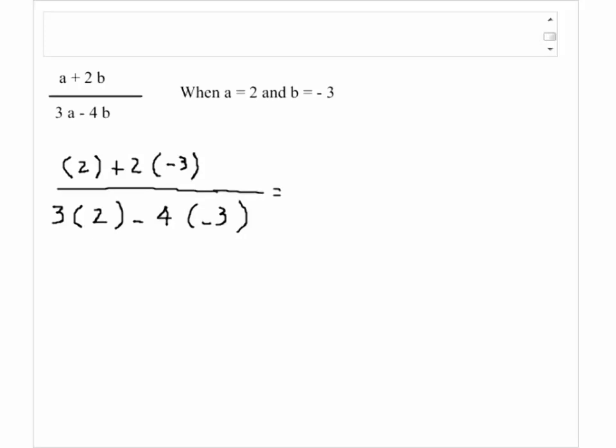I just have to follow the order of operations. Here I have the top of the fraction: 2 times minus 3 would be equal to minus 6, so I have 2 minus 6 at the top.